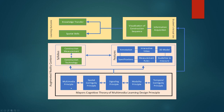The syllabus covers construction measurement and construction technology with added features. Features must contain annotation, interactive video, 3D models, guidelines on how to measure building elements, the measurement rules or Standard Method of Measurement, and specification of building elements. Student actual use includes visualization of construction sequence and information acquisition. The learning outcomes are knowledge transfer and spatial skills.